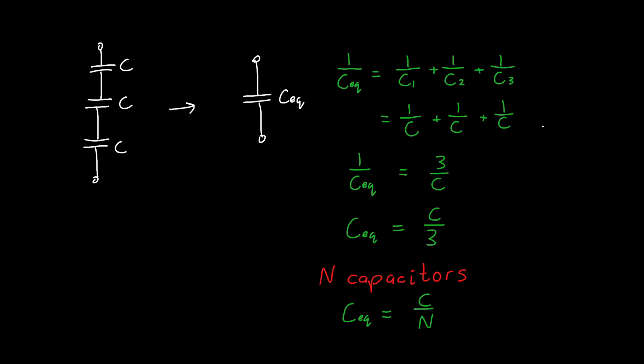And that's because if I added a fourth one, there would be another term here, and so this would be four, and this would be four. Same for five capacitors, six capacitors, and so on. And this actually turns out to be surprisingly useful, because this type of configuration with a bunch of capacitors all in series actually does show up more frequently than you might imagine.